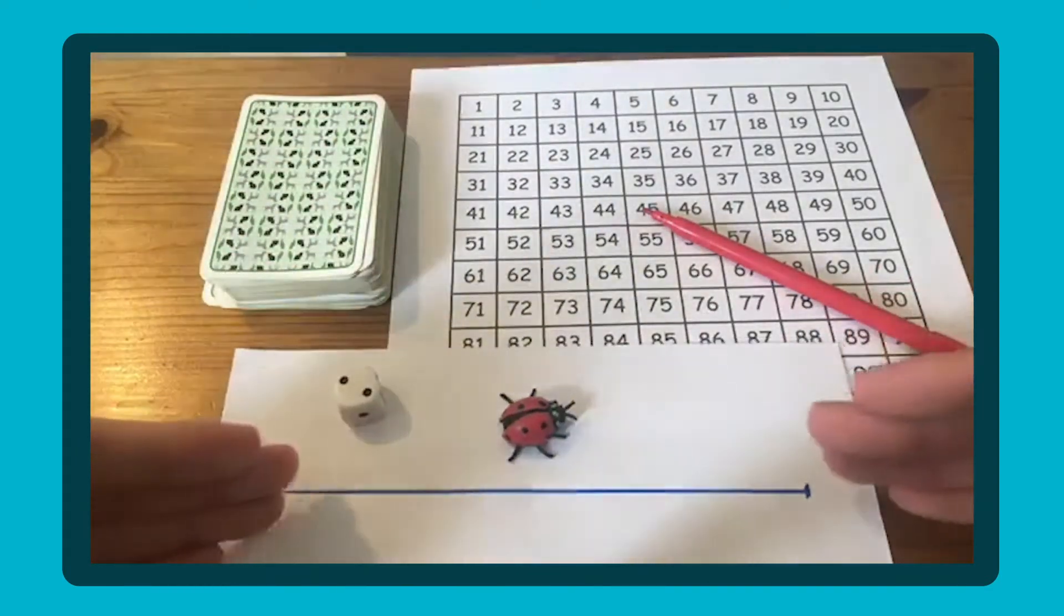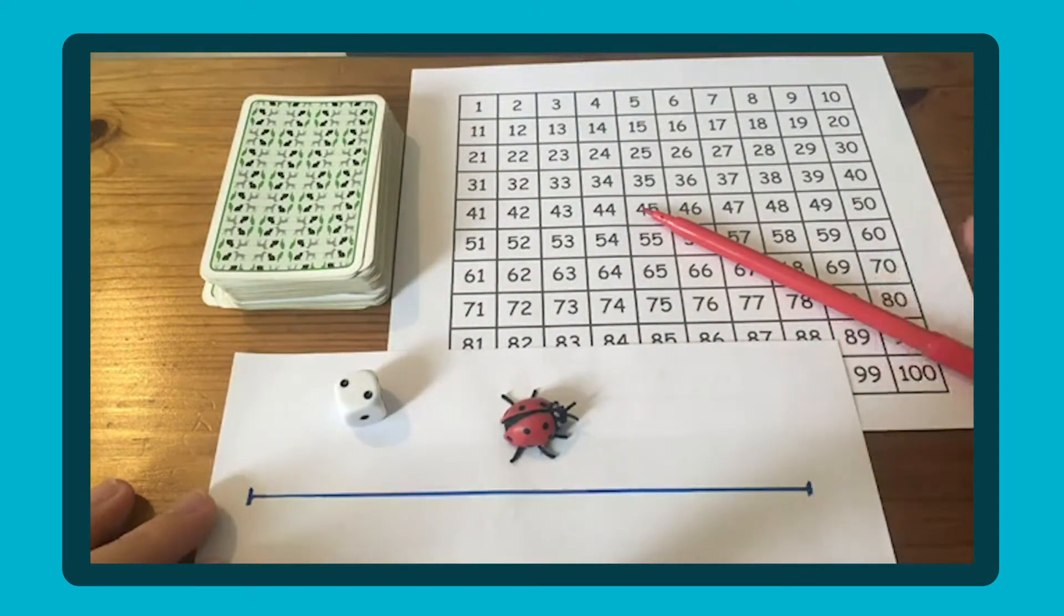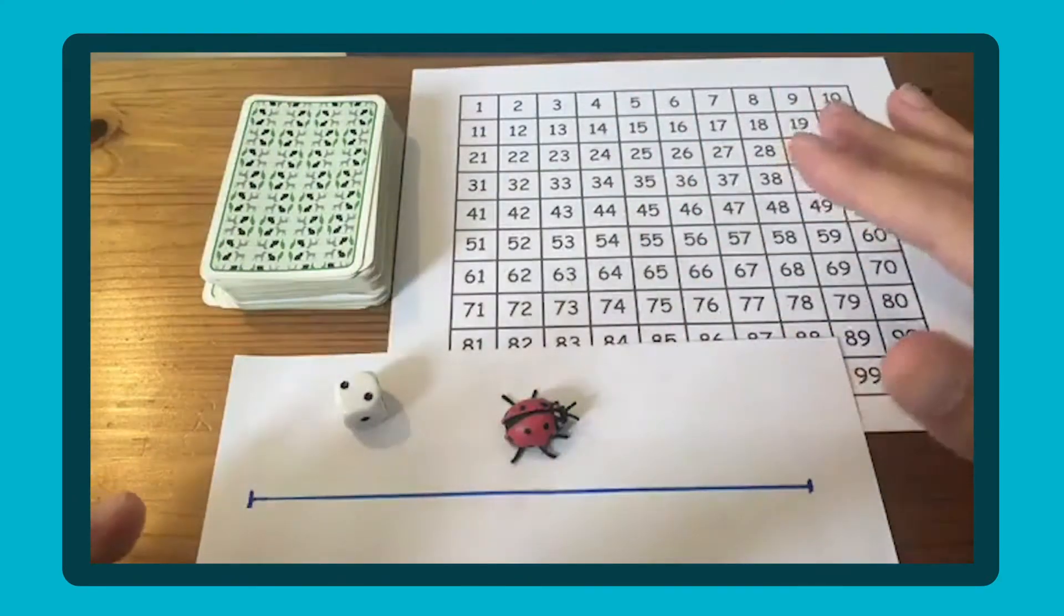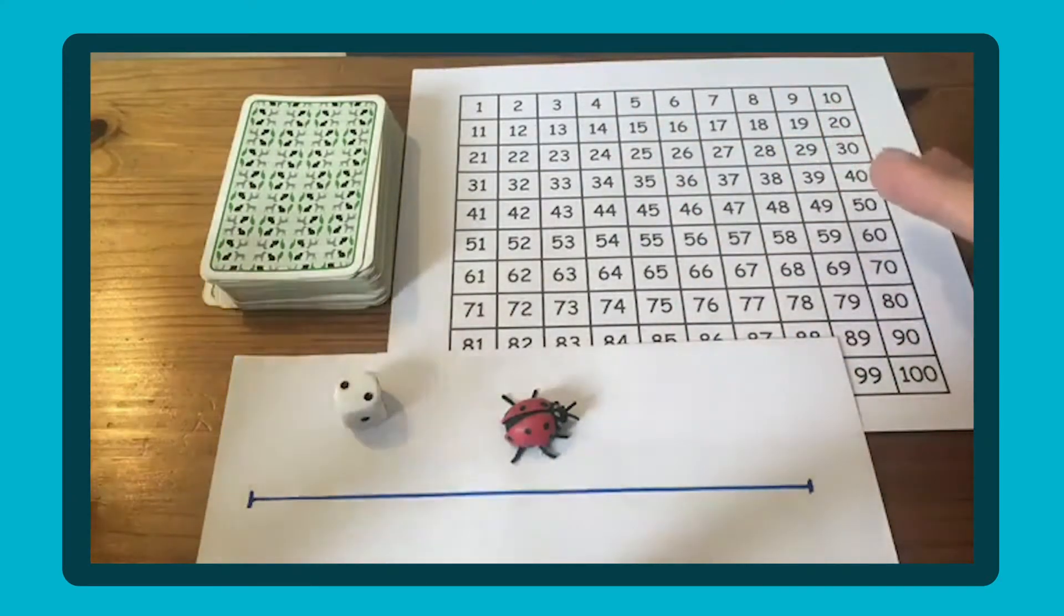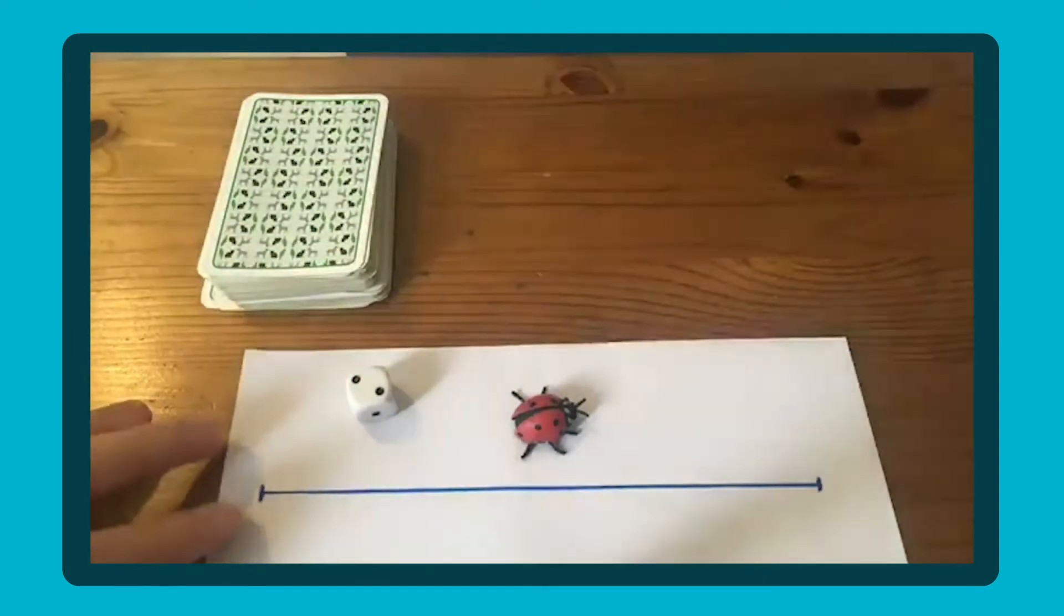You'll need a number line which acts as a scaffold to help your child count on, and a 100 grid, or you could reduce it to 20, to play a game at the end once the skill's been practiced. So let's take a look at how we're going to do this.